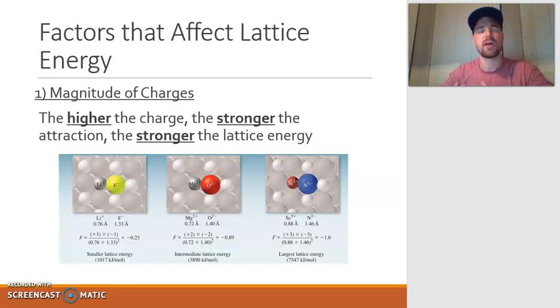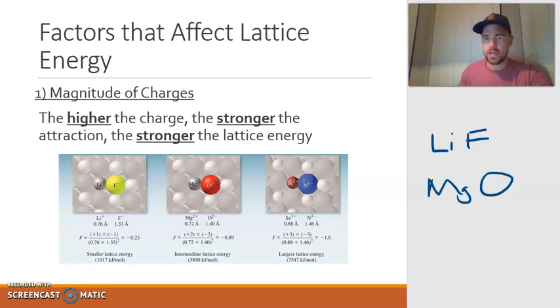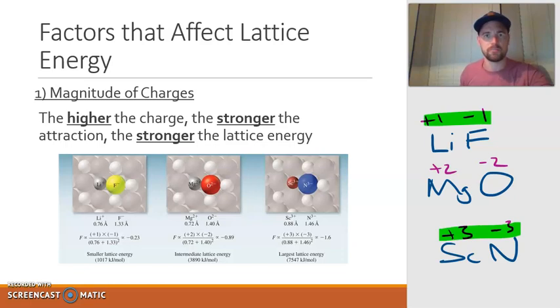First is magnitude of charges. The higher the charge, the stronger the attraction and ultimately the stronger the lattice energy. In the pictures, we have three compounds shown: lithium fluoride, magnesium oxide, and scandium nitride. Lithium is plus one, fluorine is negative one. Magnesium is plus two, oxygen is negative two. Scandium is plus three, nitride is negative three. The magnitude of charges are very low for lithium fluoride but really high for scandium nitride. Lithium fluoride has a lattice energy of about 1000, but scandium nitride is about 7500, much larger. If your magnitude of charges are larger, that results in stronger attraction.